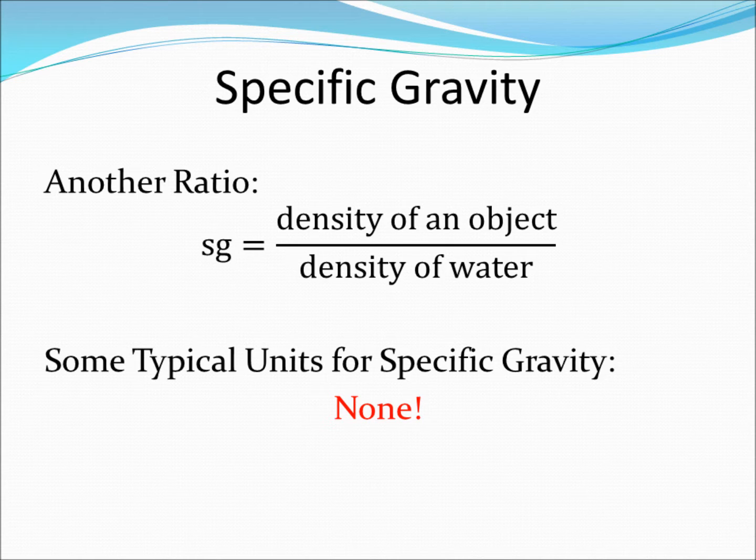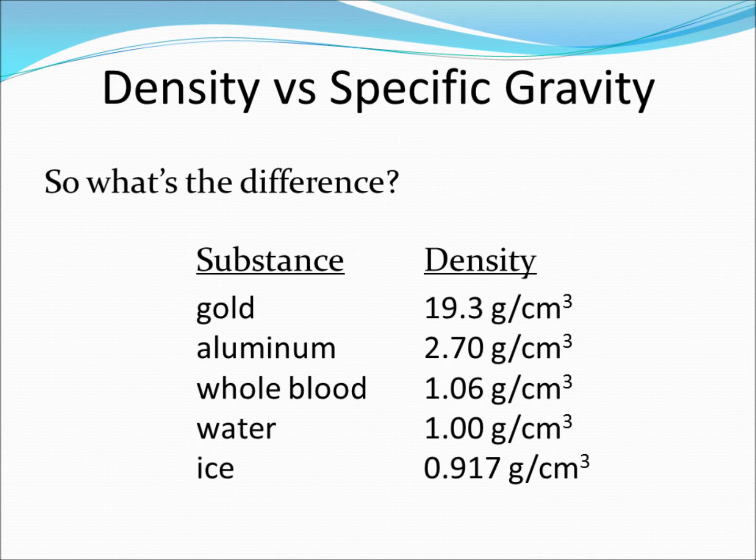So what exactly is the difference between density and specific gravity? Let's take a closer look. Here we have some density data for various substances. We can see that gold is very dense while ice is not dense at all. We see that ice will float in water because its density is less than that of water, while gold will sink in water since its density is greater than that of water.